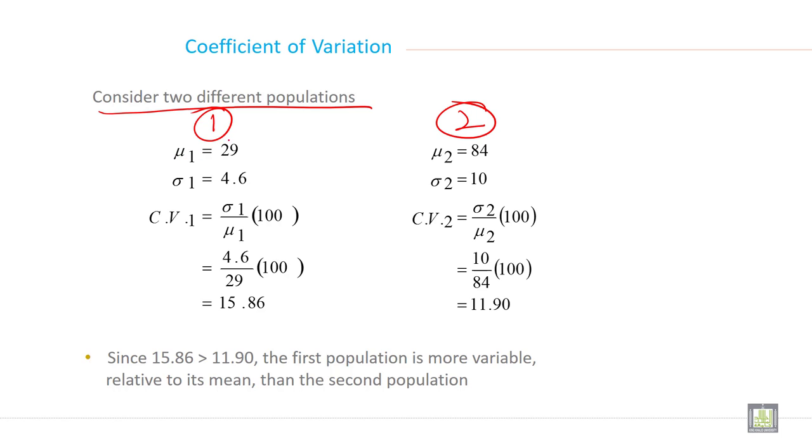So mu1, mean of first population is given as 29. Standard deviation given as 4.6. So then calculate coefficient of variation for first population. So this is the formula and when you put all these values it is 15.86.